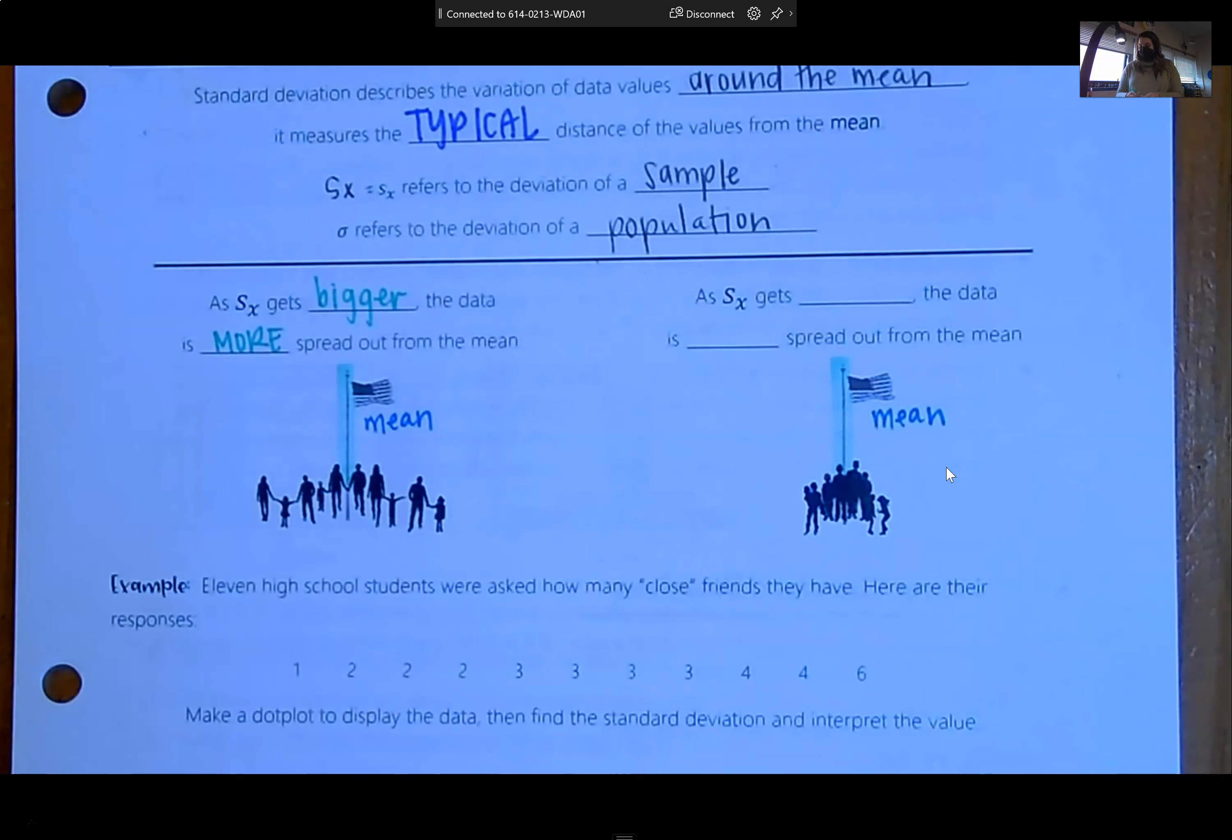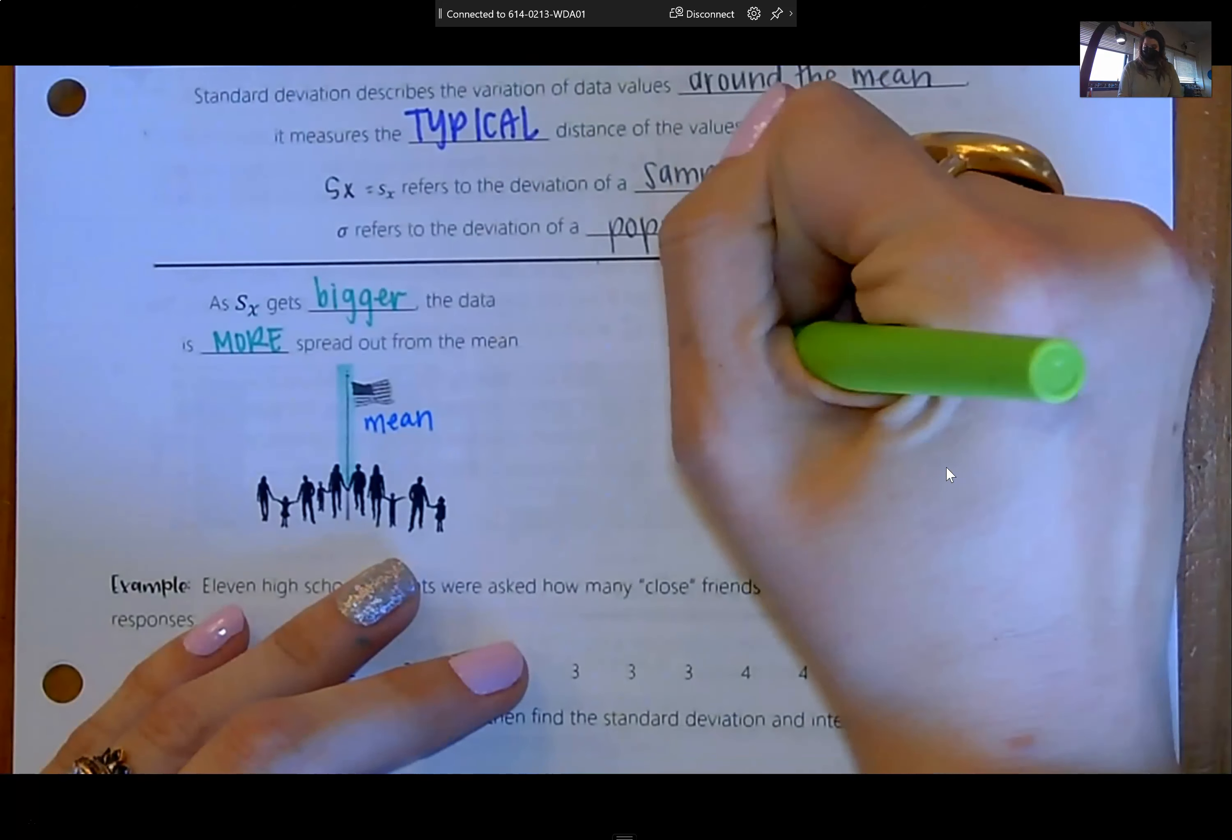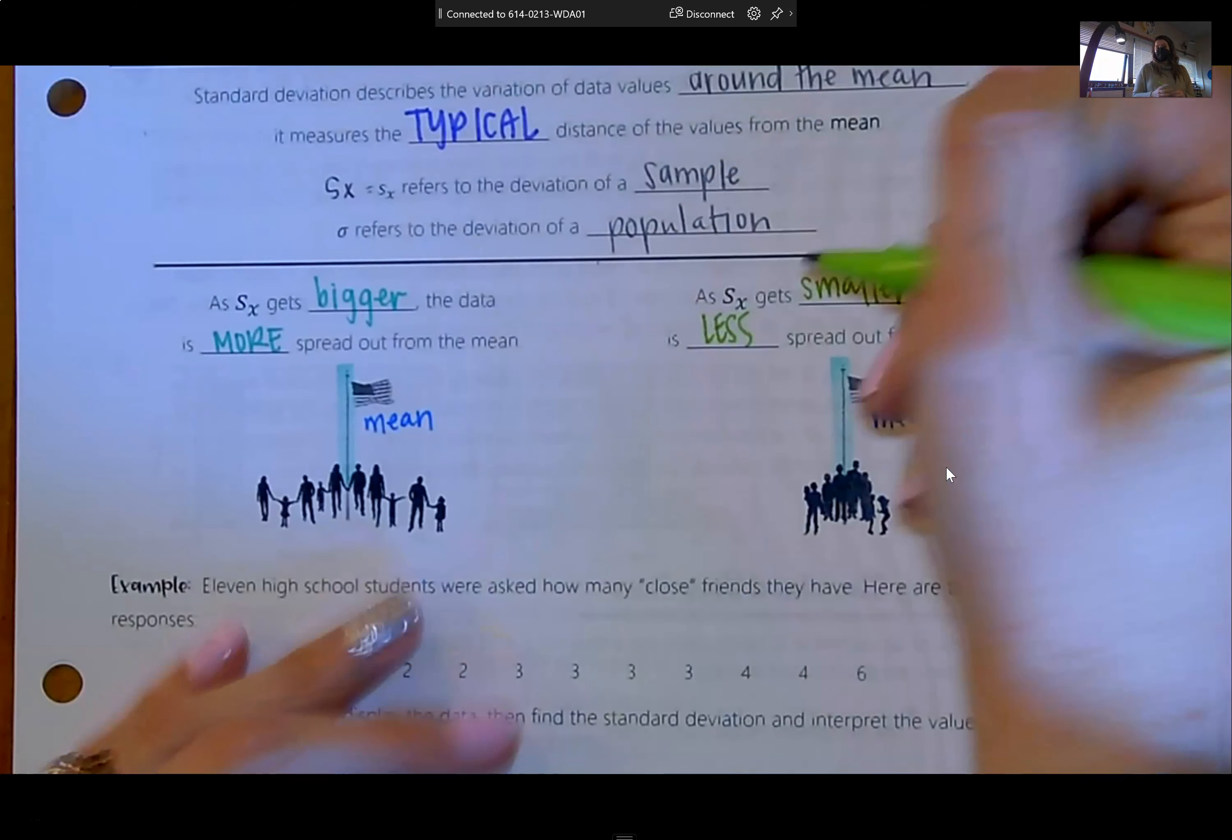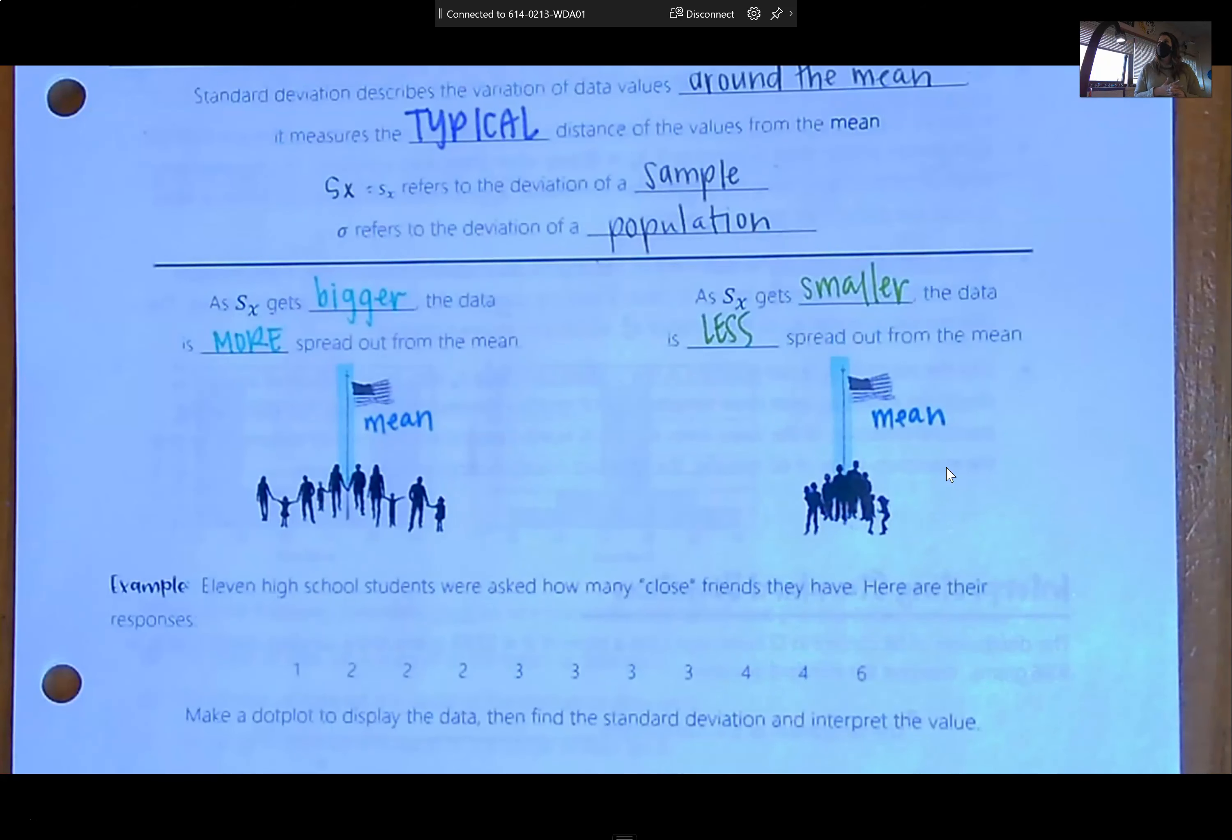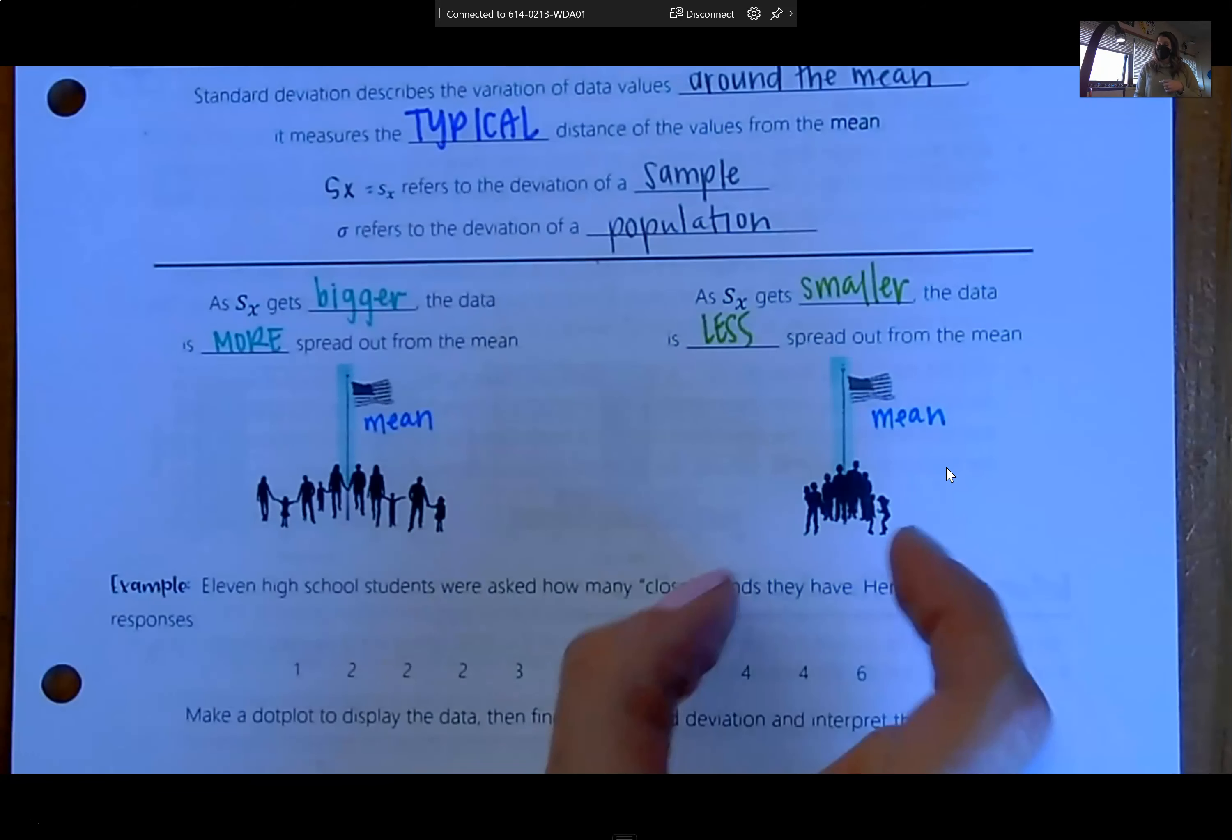As standard deviation gets bigger, the data is more spread out from the mean. So your observations are farther away from your flagpole. On the right-hand side, it's the opposite. As your standard deviation gets smaller, your data is less spread out. Which one do we want? We want small spread. Because most of the time, we're estimating a value.